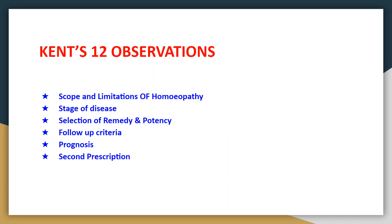Cain's 12 observations must be studied in order to understand the scope and limitations of homeopathy, the stage of disease (whether it is functional or structural), the selection of remedy and potency and its repetitions, the follow-up criteria, the prognosis of the case, and also to help in the determination of the second prescription.